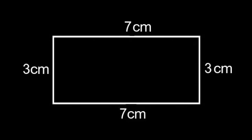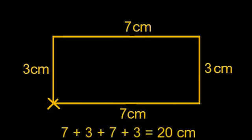To find the perimeter, let's assume we're starting at one corner, marked with a yellow cross. We proceed along one side — when we get to the other corner, we've measured seven centimetres. We proceed along the next side and cover another three centimetres, so ten centimetres altogether. Along the third side we cover another seven centimetres — seventeen centimetres total. We proceed along the final side — another three centimetres — and arrive back where we started. The perimeter of this rectangle is twenty centimetres.